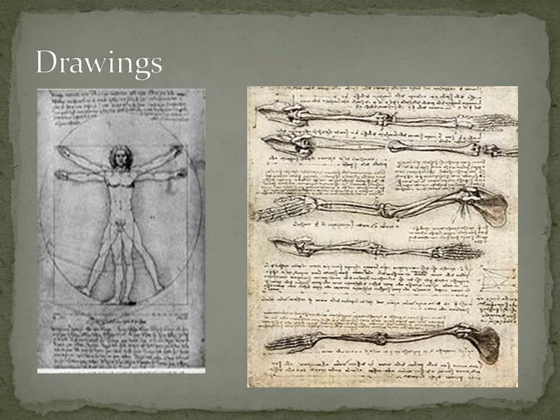Regarding drawings: Leonardo studied the anatomy of humans and animals. He was the first to describe the double-S form of the backbone, and he made one of the first drawings of the fetus. His famous drawing is the Vitruvian Man, which is about the human body. He made over 240 detailed drawings. Leonardo was ignored as a scientist because he had no formal education in Latin and mathematics.